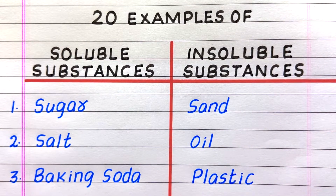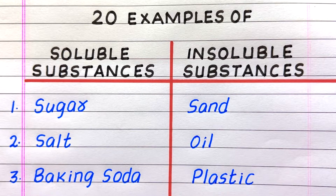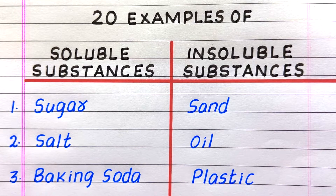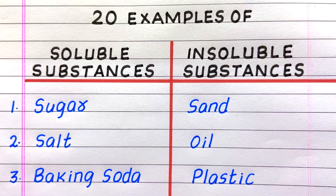First example of a soluble substance in water is sugar, second salt, third baking soda. First example of an insoluble substance in water is sand, second oil, third plastic.